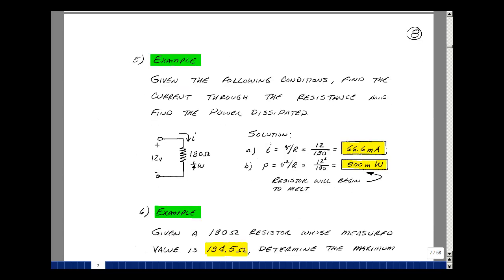Let's take a look at an example where we do some calculations of current and power. Suppose I have a 180 ohm resistor, a quarter watt, and I put 12 volts across it. Let's find the current that flows through the resistor. That would be 12 volts divided by 180 by Ohm's law, and that would be 66.6 milliamps in engineering notation.